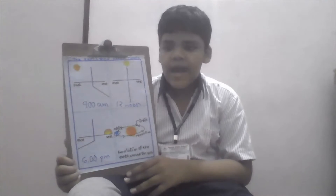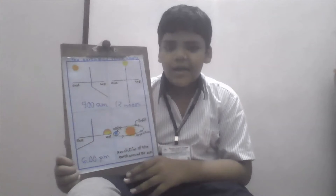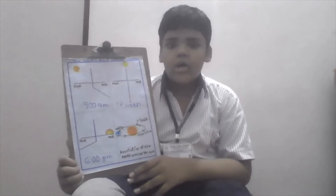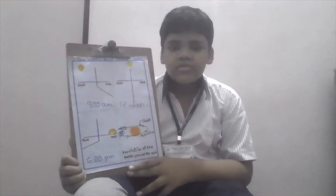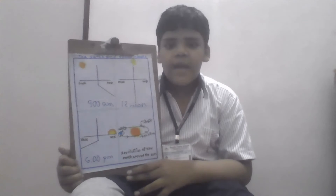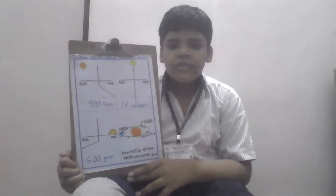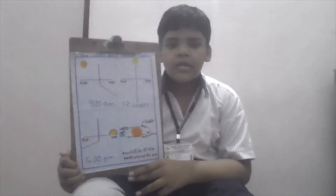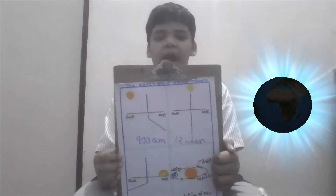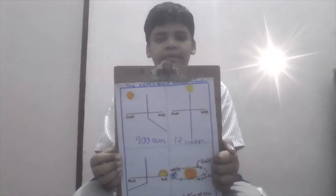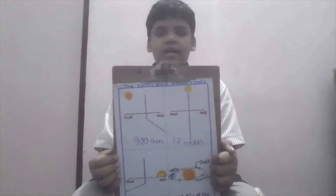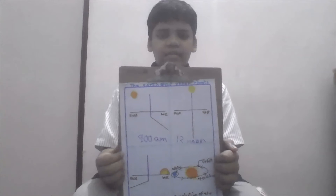This is happening due to the location of Earth on its own axis and the revolution of the Earth around the sun. As the Earth rotates, the position of the sun in the sky keeps on changing.